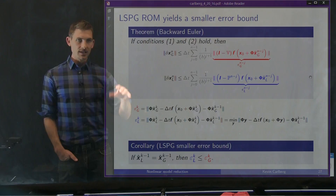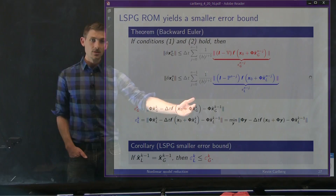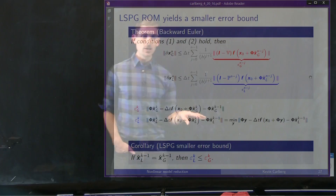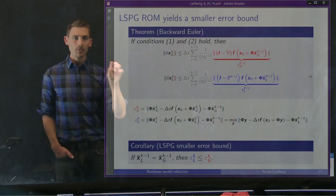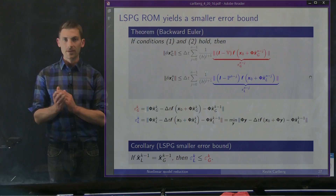In the backward Euler case, we can write explicit error bounds for Galerkin and LSPG. The ε_G term is just the backward Euler residual norm. For the LSPG model with A equal to identity, we know that the LSPG model minimizes this residual over all possible Y. As a corollary: if Galerkin and LSPG start from the same solution at time step K-1, then the error bound for that time step will be smaller for LSPG — an obvious result from the residual minimization property, suggesting that LSPG can deliver more accurate results than Galerkin.